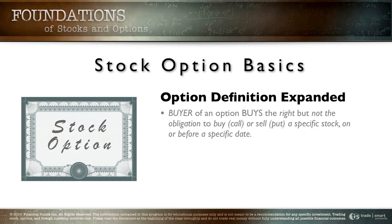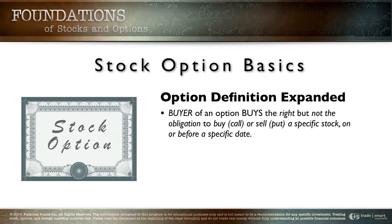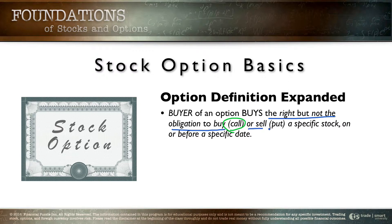If we can understand these four trades, then everything in the world of options starts to open up. Let's expand our definition a little bit. The right but not the obligation to buy — we're going to call that the call option, because the call is the right to buy. The right but not the obligation to sell — we'll call that the put option, because the put is the right to sell a specific stock on or before a specific date.